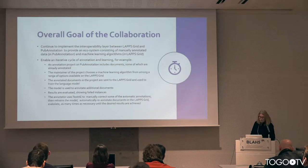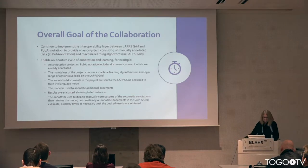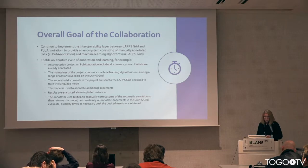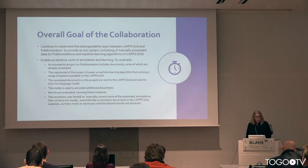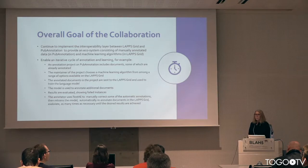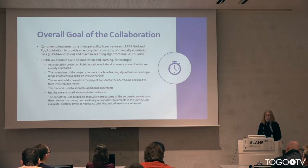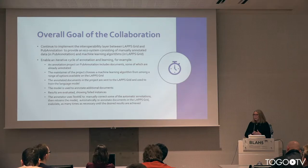The overall goal of our collaboration is to eventually create a total ecosystem where people can use machine learning in the LAPS grid and iteratively go through a cycle. Here's an example: you take a project on PubAnnotation, choose a machine learning algorithm, push your documents into the LAPS grid, train the language model, and use the model to annotate additional documents. We have good evaluation tools, and then you can use TextAE to manually correct them and retrain the model — repeating this iterative cycle as long as needed.